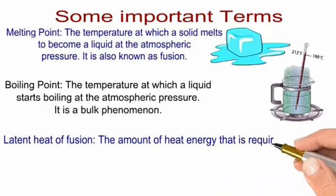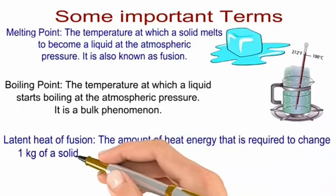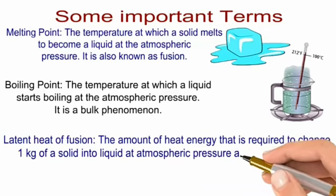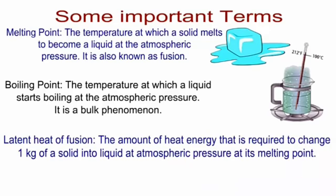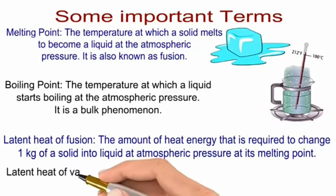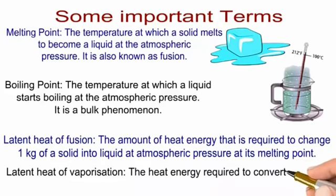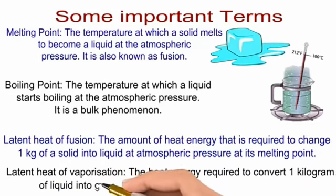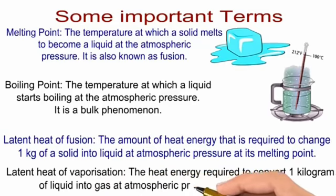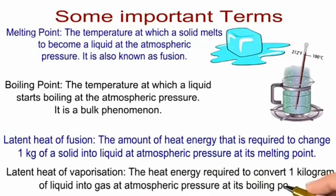Now we will look at the definition of latent heat of fusion. It is associated with solid. The amount of heat energy that is required to change 1 kg of a solid into liquid at atmospheric pressure at its melting point is called latent heat of fusion. The heat energy required to convert 1 kg of liquid into gas at atmospheric pressure at its boiling point is called latent heat of vaporization.